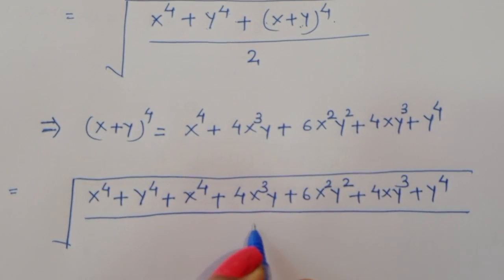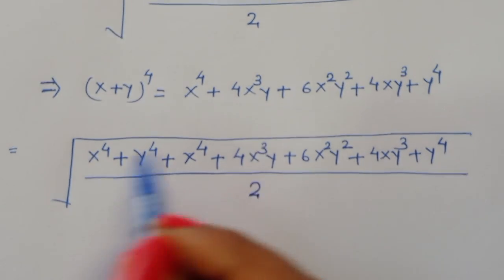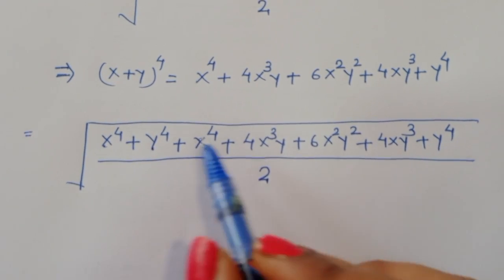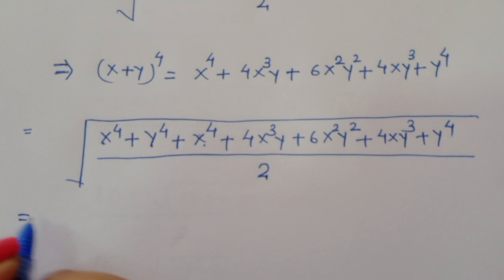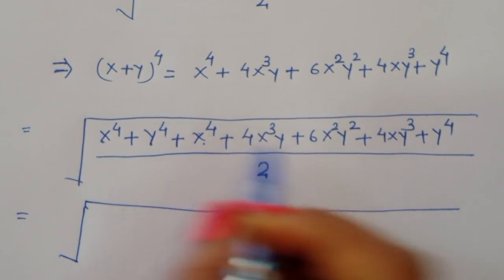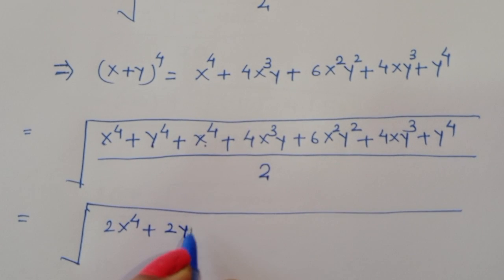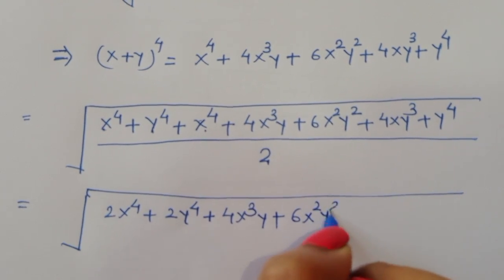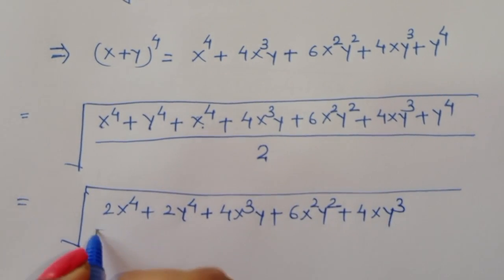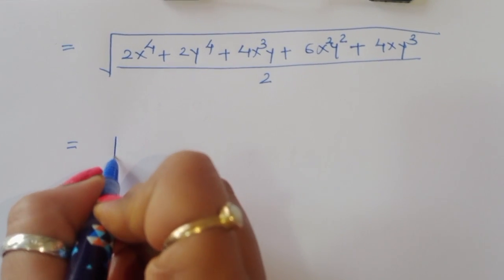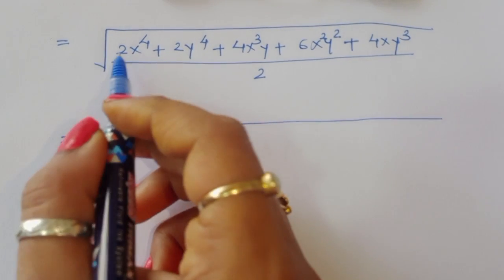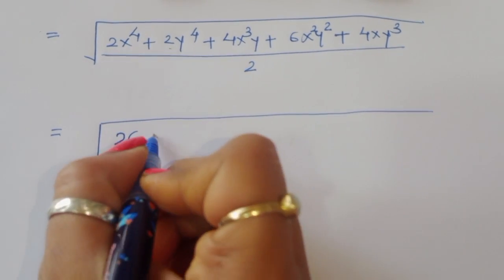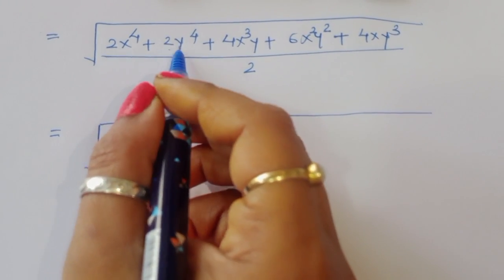Combining like terms: x⁴ + x⁴ = 2x⁴, and y⁴ + y⁴ = 2y⁴. So the numerator becomes 2x⁴ + 2y⁴ + 4x³y + 6x²y² + 4xy³ divided by 2. We can take 2 as a common factor from all terms.